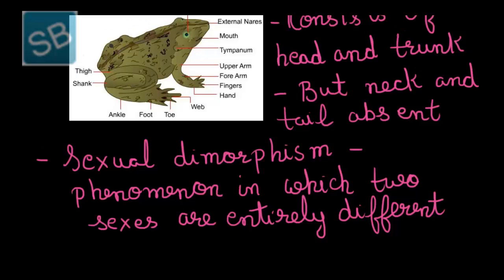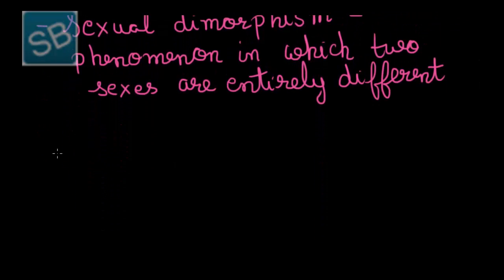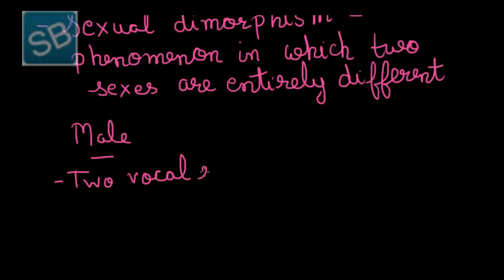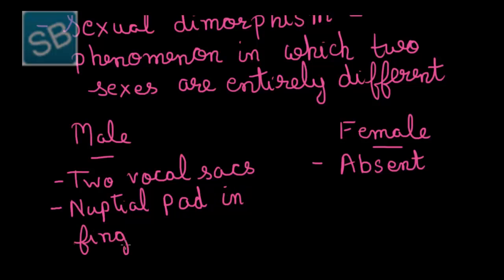During breeding season, frogs exhibit various characters that differ in males and females. For example, in males, two vocal sacs are present, whereas in females vocal sacs are absent. Nuptial pads are present on the index finger of males; however, such pads are absent in females.